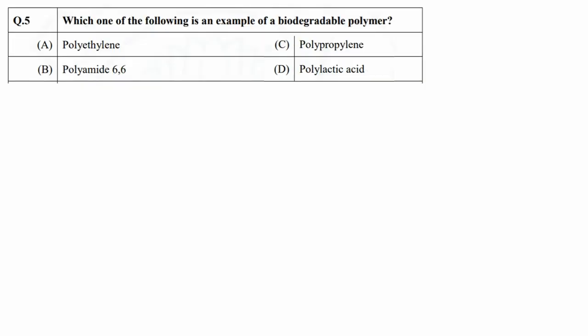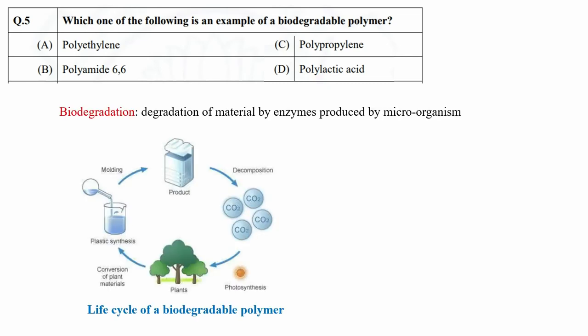In question 5, you need to identify biodegradable polymer among the given options. Biodegradation means degradation of material by enzymes produced by microorganisms. Biodegradable plastics are made from natural plant materials such as corn oil, orange peel, starch, and plants. These polymers have carbon backbones that can easily undergo hydrolysis. The degradation of these polymers results in formation of natural by-products such as oxygen, nitrogen, carbon dioxide, water, biomass, and inorganic salts.